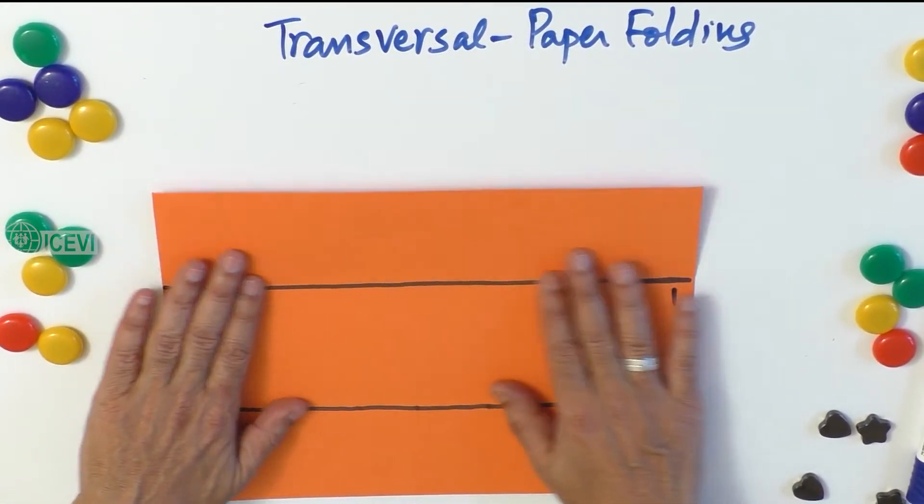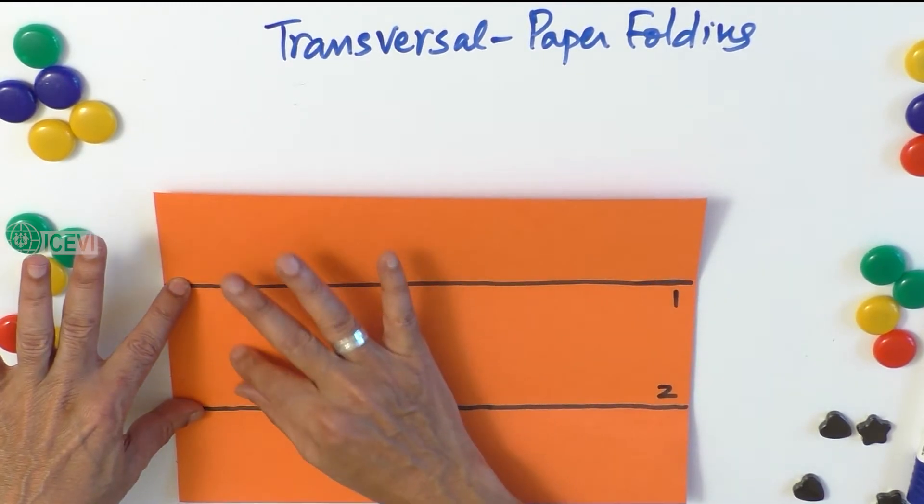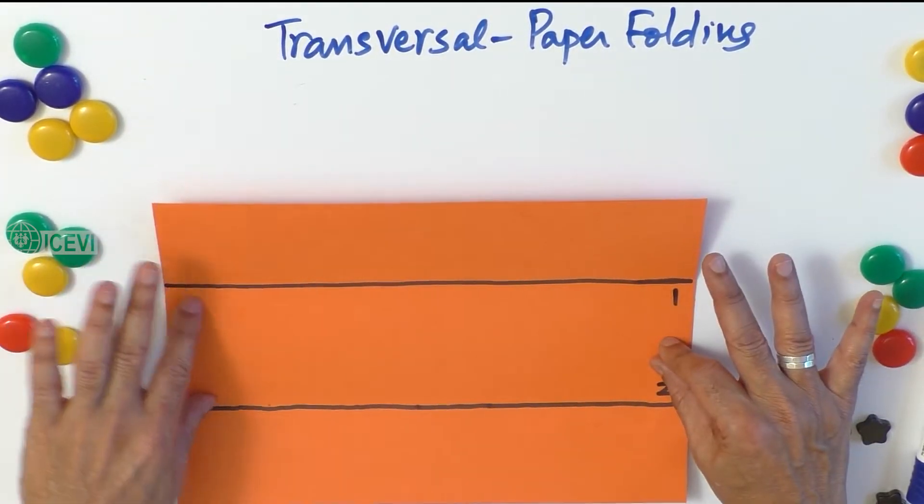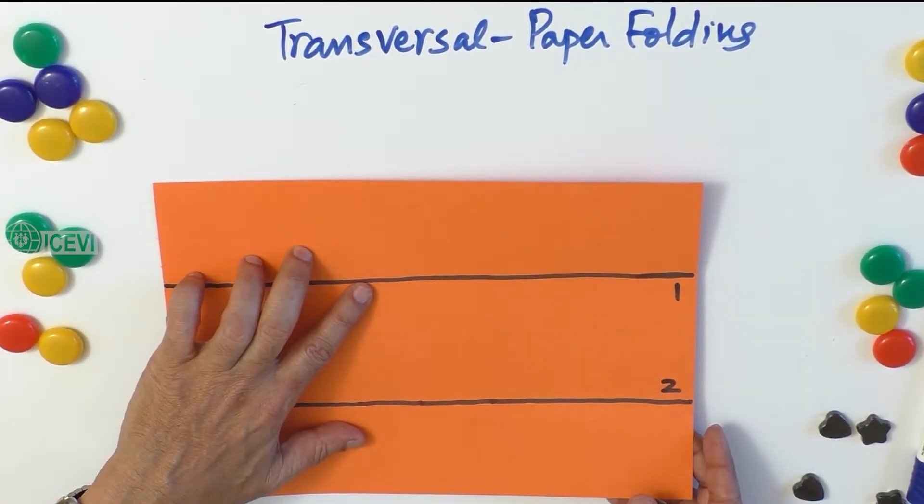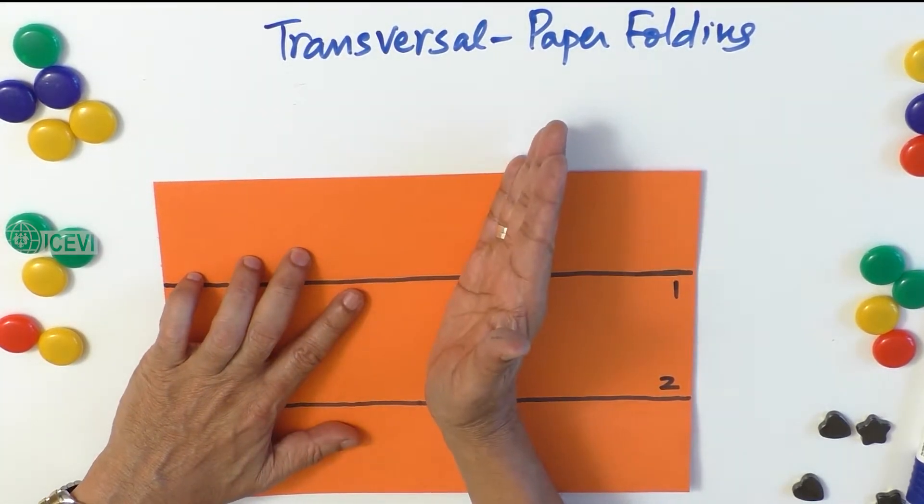That the distance between these two lines is the same. Now the transversal is going through these two lines on the same plane at two distinct points.